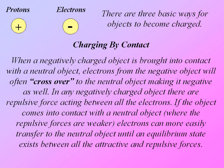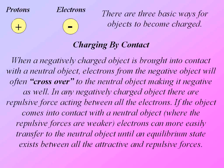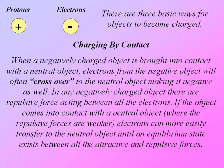In any negatively charged object, there are repulsive forces acting between all the electrons. If the object comes into contact with a neutral object, electrons can more easily transfer to the neutral object until an equilibrium state exists between all the attractive and repulsive forces.